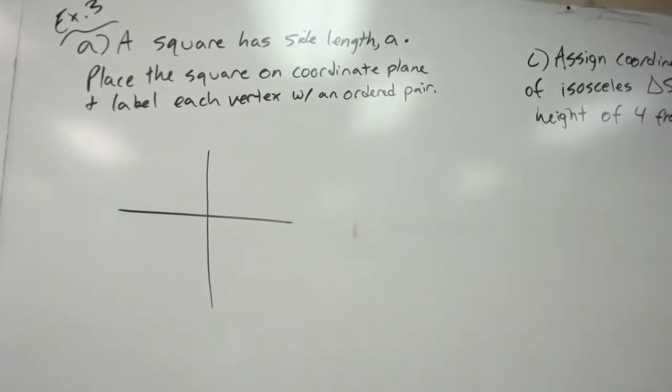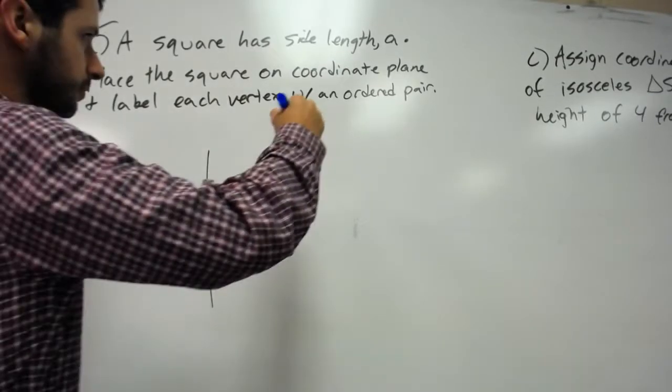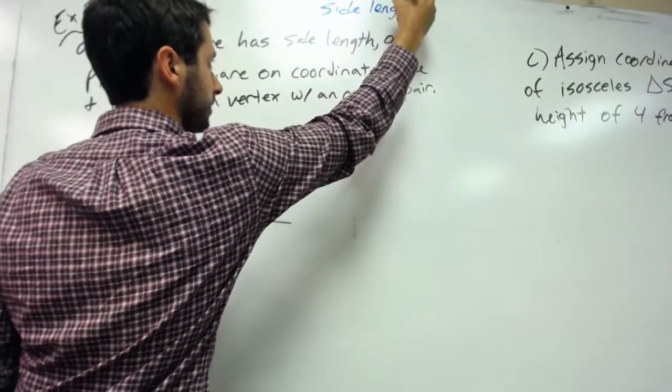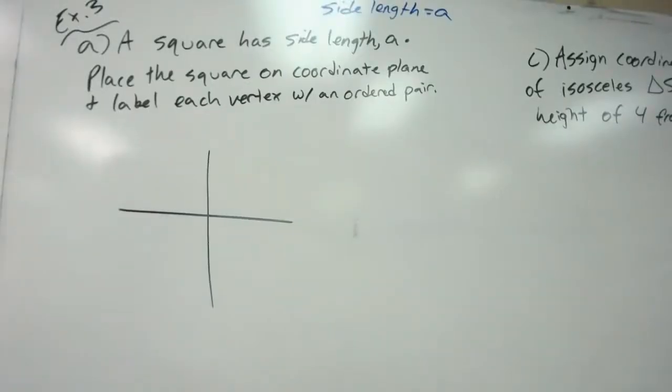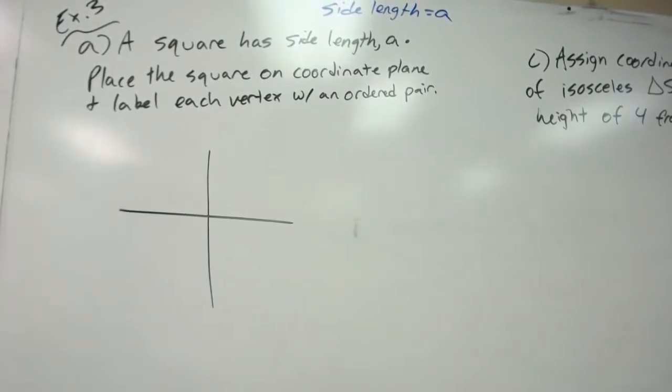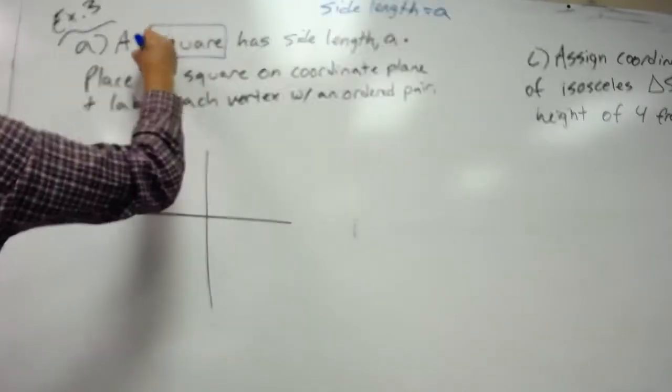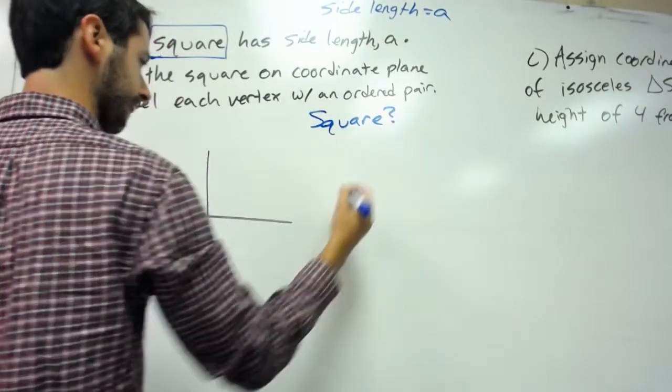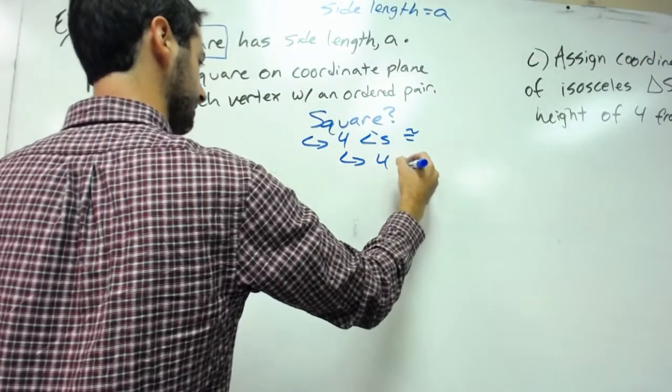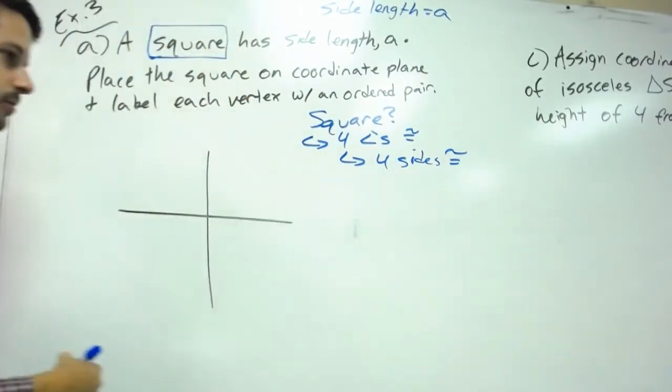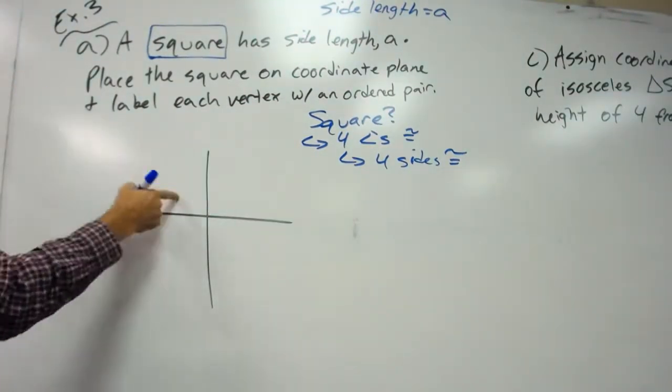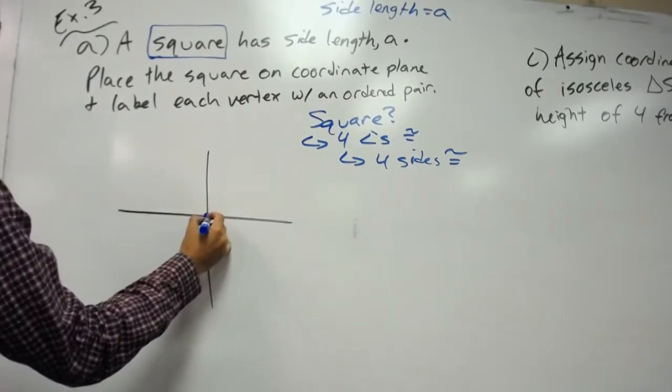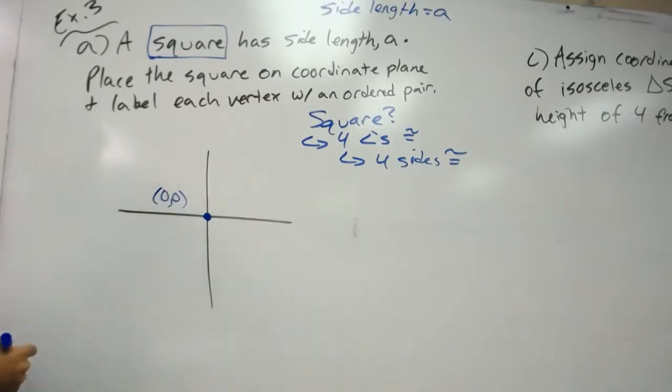Example 3 says, A says you have a square with a side length of A. Okay, that's weird. Your side length equals a letter, A. Place the square on the coordinate plane and label each vertex with an ordered pair. So it doesn't really seem to have given us much. Well, we've got to look at clue words. First thing it says is square. Well, what do we know about a square? Well, we know all four angles are congruent. We also know all four sides are congruent. So how can we use what we know and place this square on a coordinate grid? Well, let's start at the ordered pair of (0,0). Starting at the origin. We're going to call that one of our coordinates on the square. Now we need to figure out how to use the side length A.